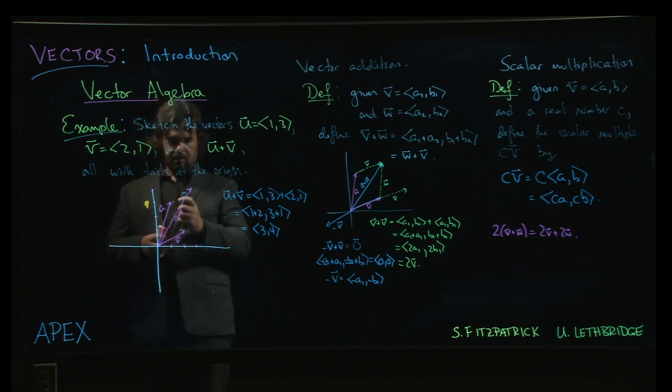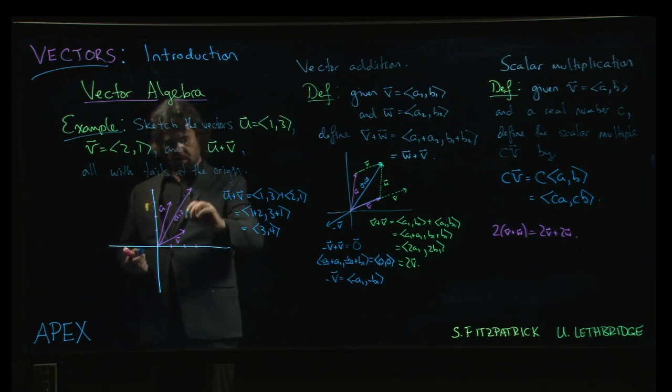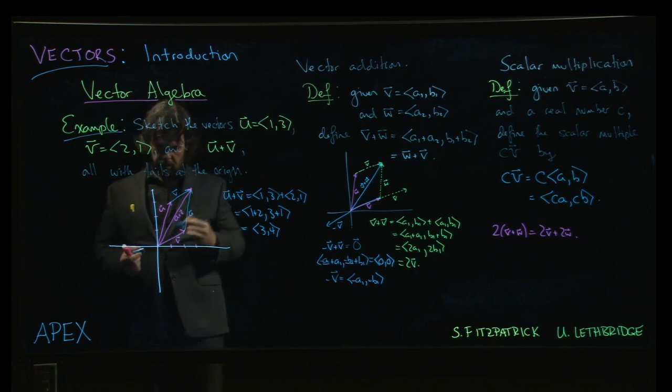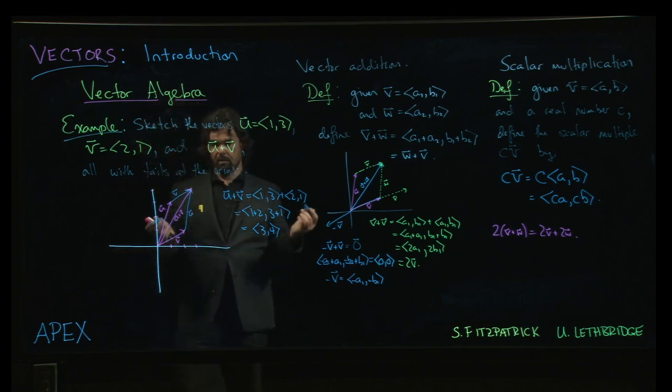And again, you'll notice that this vector here going from the tip of v to the tip of u plus v, that's another copy of u. That vector going across there, that's another copy of v. So, checks out.